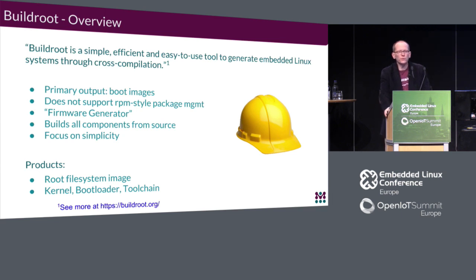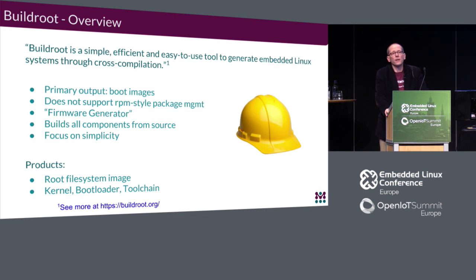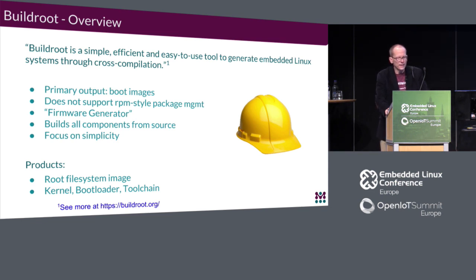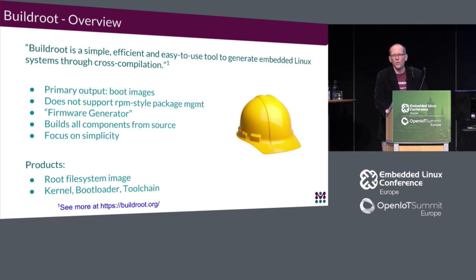BuildRoot has a similar objective to Yocto but focuses on much simpler systems by default. It doesn't support package feeds the same way Yocto does — the primary output is just the images installed on your system: root filesystem, kernel, and bootloader. It builds everything from source and defaults to simplicity. If you download BuildRoot sources and build without modifications, you get a very bare-bones system that comes up to a shell prompt and connects to wired Ethernet, and then you add what you need.